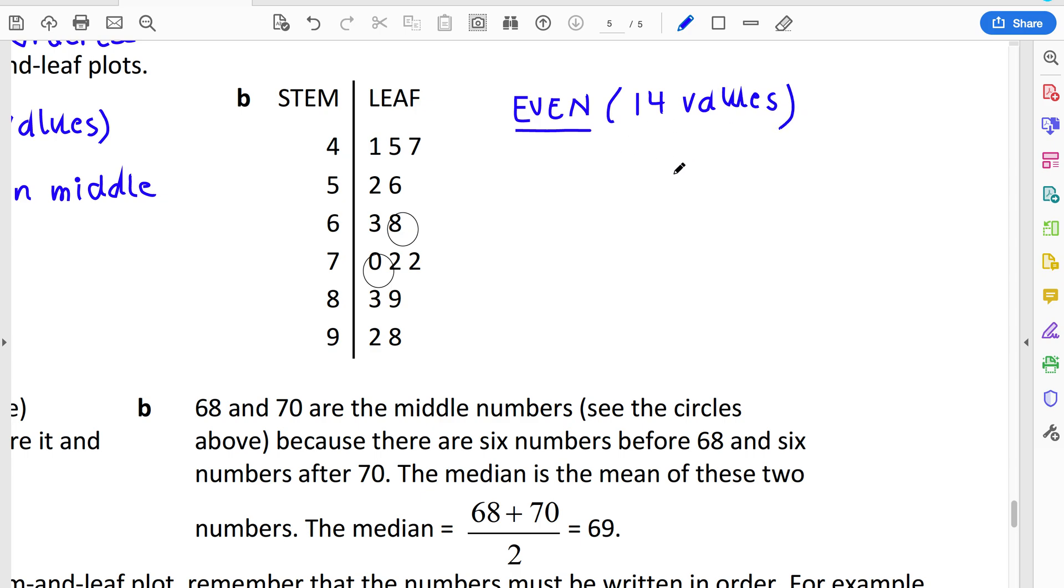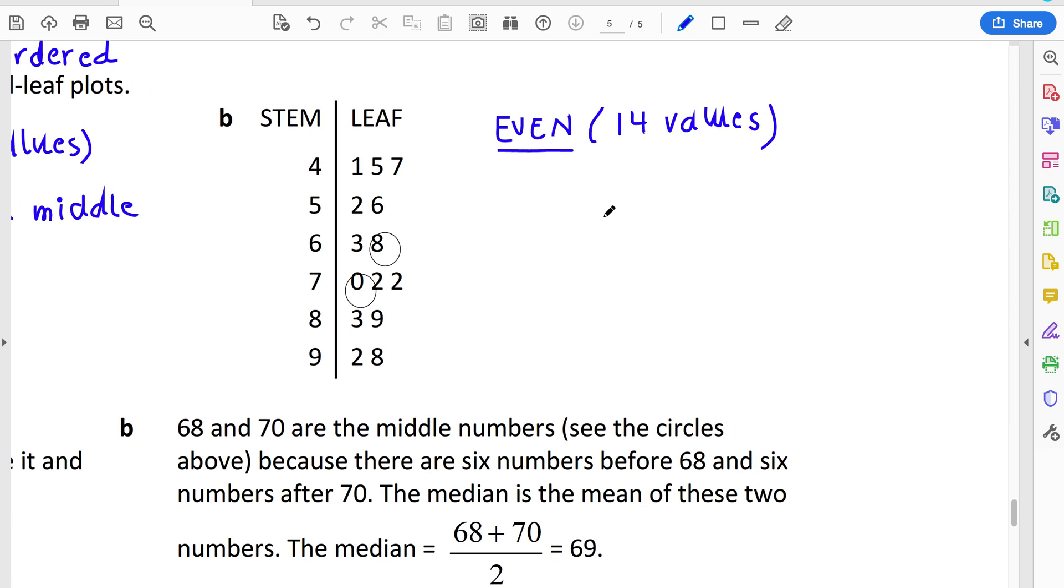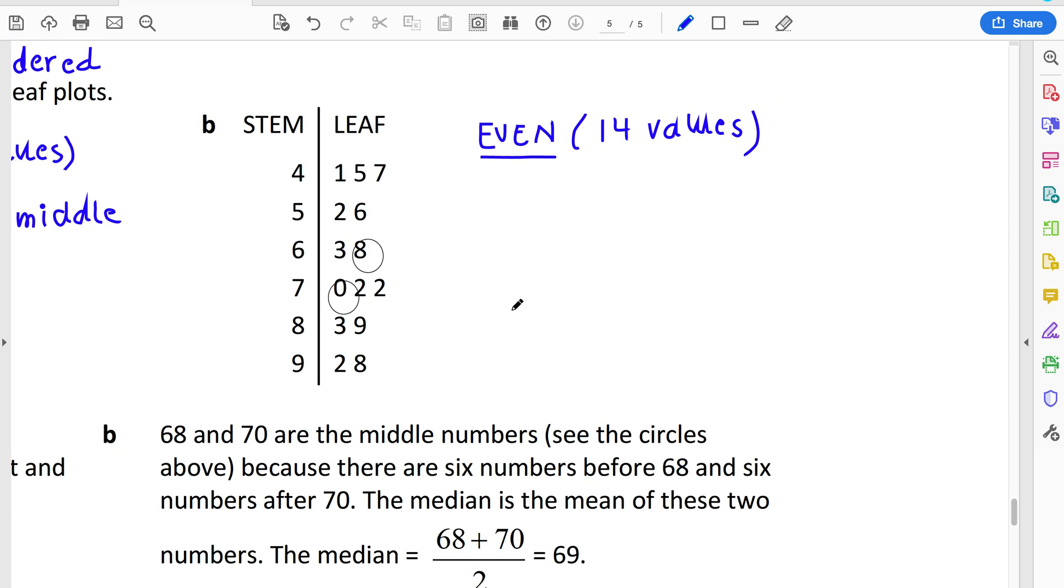Now, because of this, that means we don't actually have one single number that sits in the middle. We actually will always have two values that are sitting directly in the middle. So what I'll say is that there are two middle values. Then think about how many you've got left. If there's 14 altogether, two of them are in the middle, there's 12 other values. And let's just split that, six and then another six.